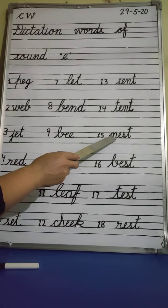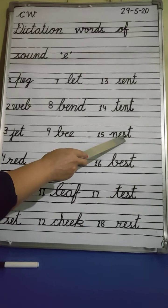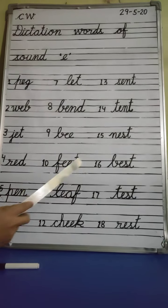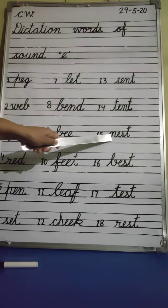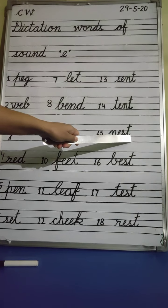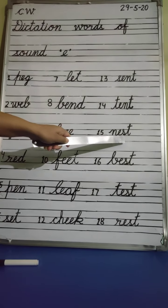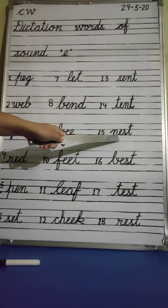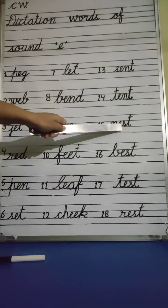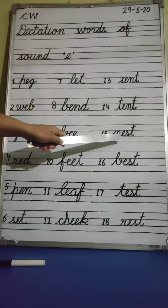Next. N, E, S, T — Nest. Where do birds live? In the nest. N, E, S, T — Nest is the home of birds. Okay.